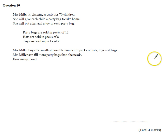Question 10. Mrs. Miller is planning a party for 70 children. She will give each child a party bag to take home. She will put a hat and a toy in each party bag. Party bags are sold in packs of 12, hats in packs of 8, toys in packs of 9.